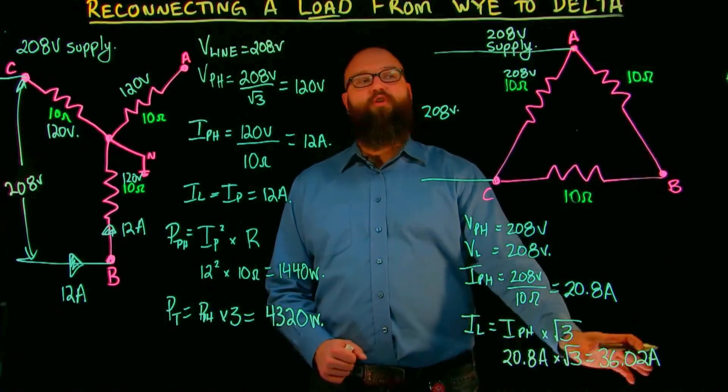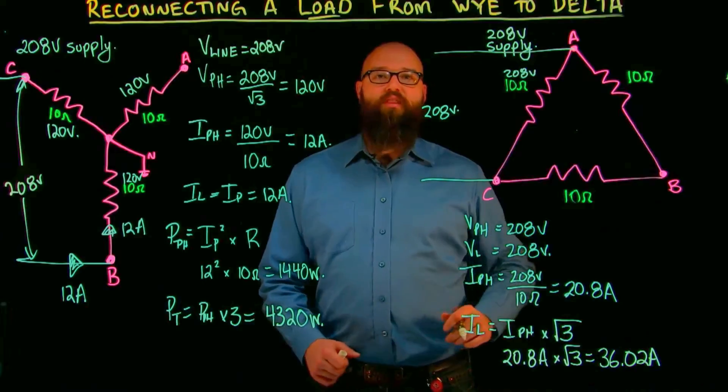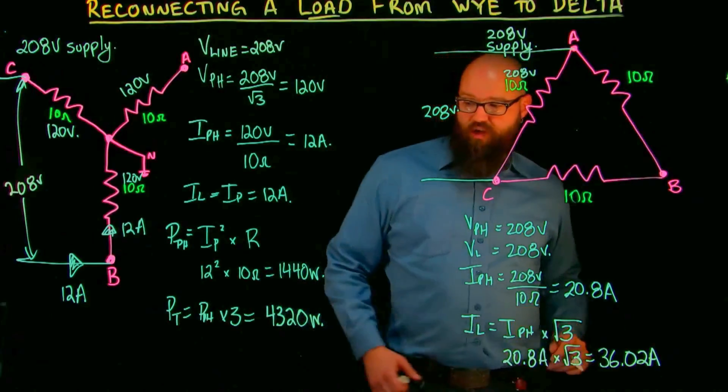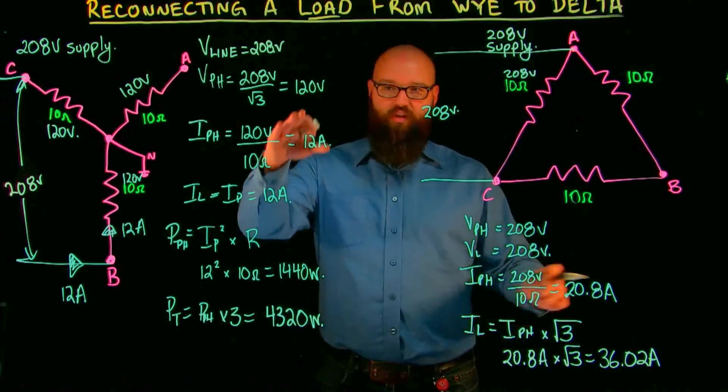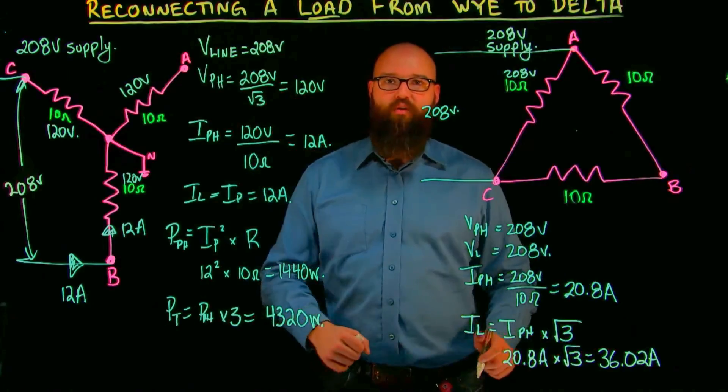Or a root 3 larger current than we saw previously. Or sorry, we see a root 3 larger current in our line than we did in our phase, and it actually ends up being three times the size of the current, roughly 12 to 36 somewhere around there, than it was originally in a Y-connected circuit.